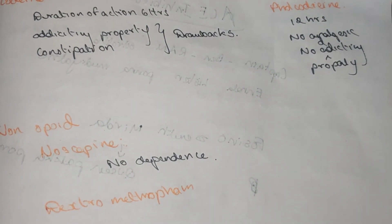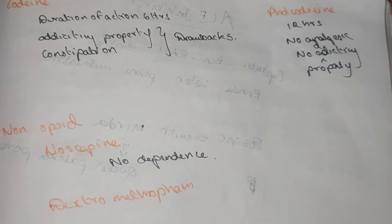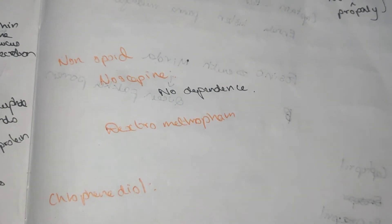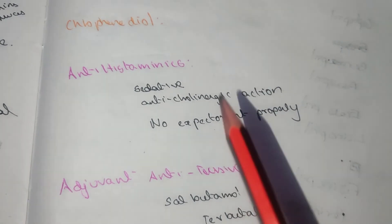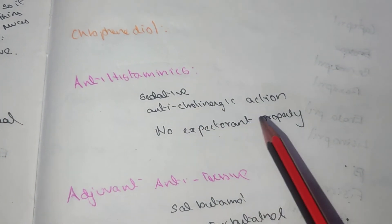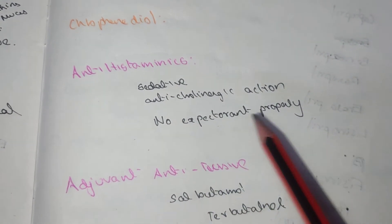These are the advantages of pholcodeine. Non-opioids are noscapine, which is non-dependence, and dextromethorphan. Antihistaminics have sedative, anticholinergic action and non-expectorant property.